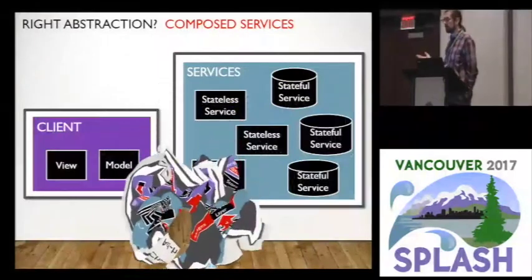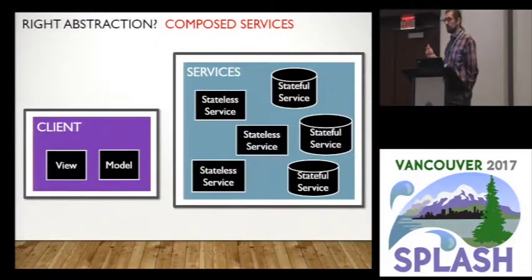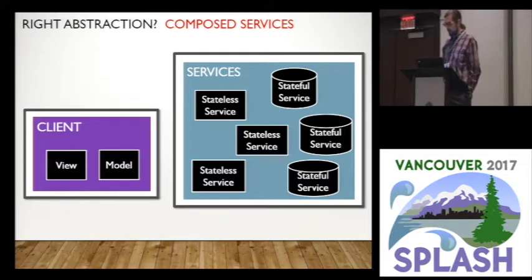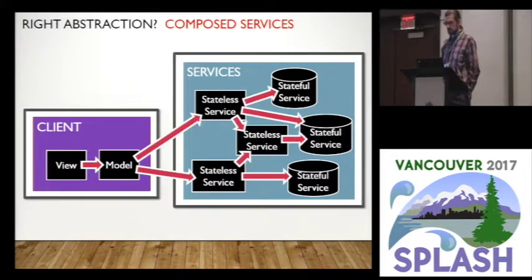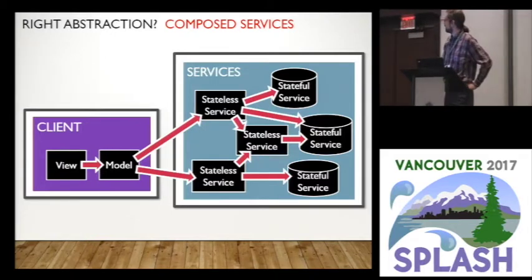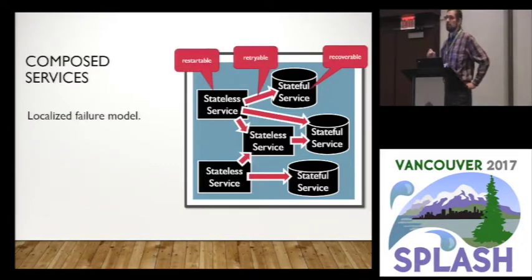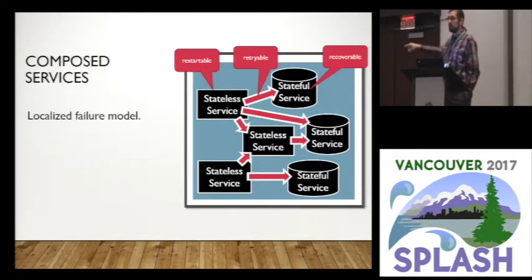What we need is abstractions to help us not think about it that way. Rather, we would like to think about it as a composition of services, using standard principles of composition that we do for any other software project. What's emerging is that we can build everything as a composition of services. This helps us because we can localize the failure model — instead of thinking about how failures happen anywhere, we can think about each piece and what it does when failures happen.